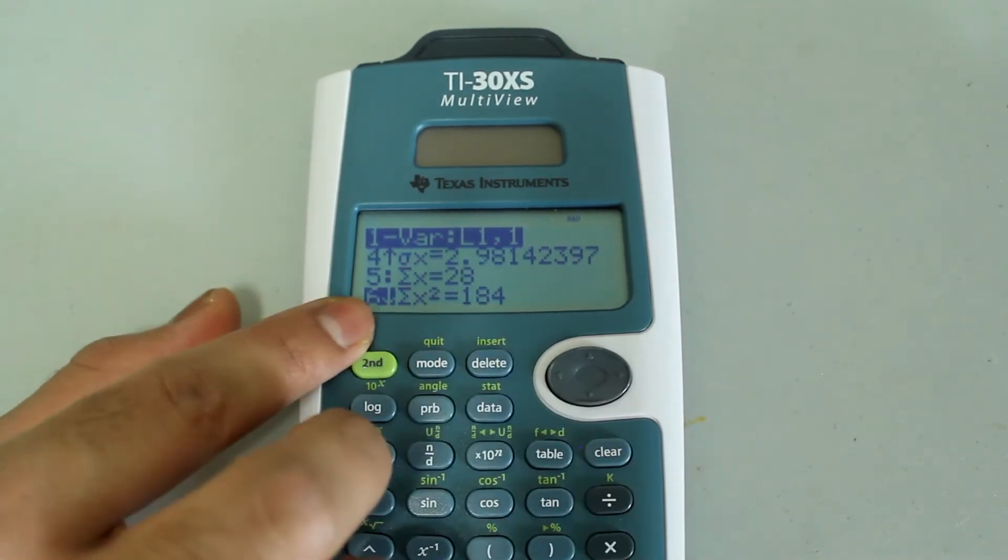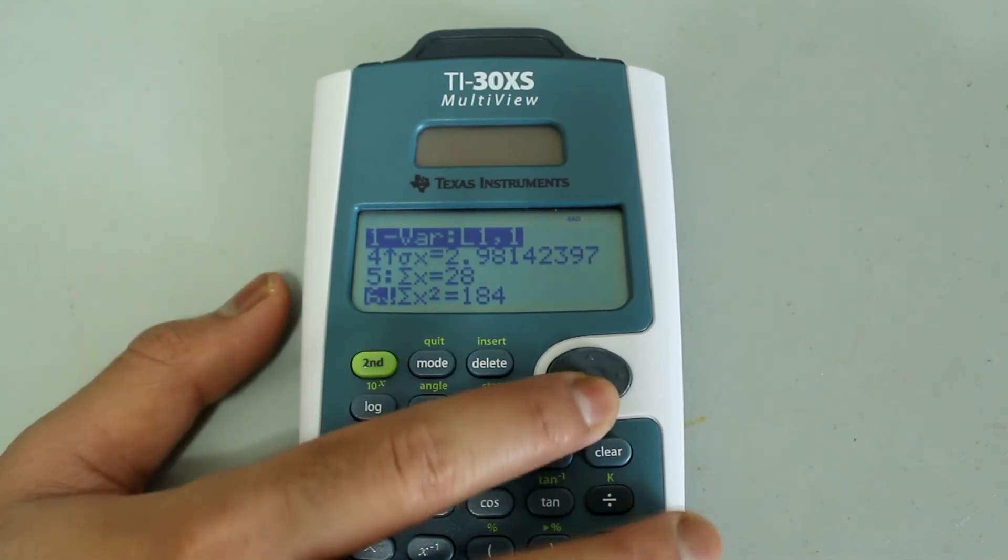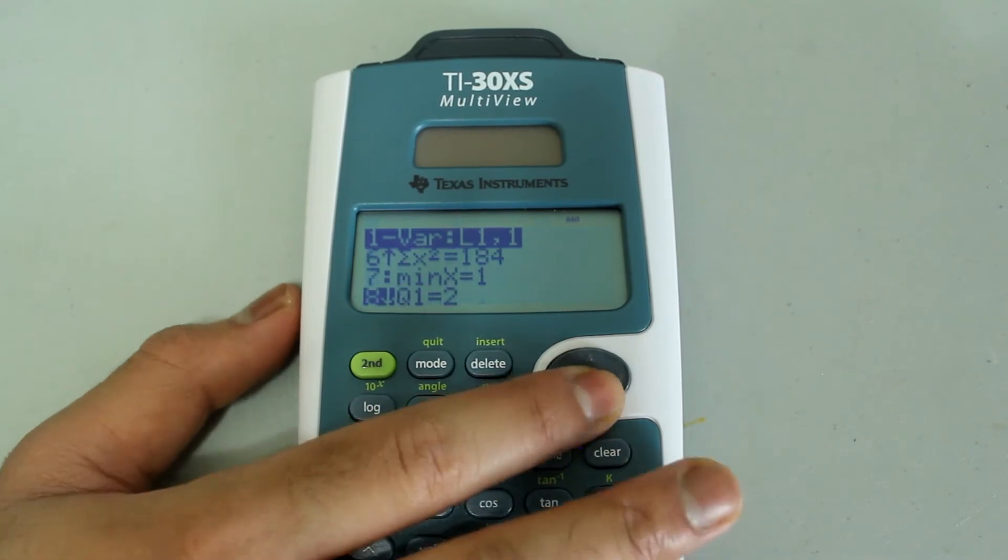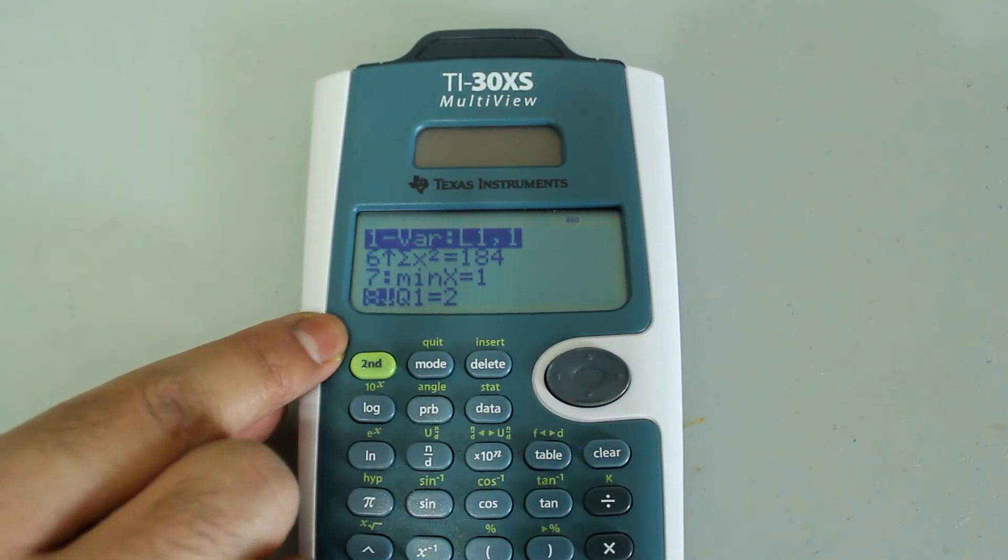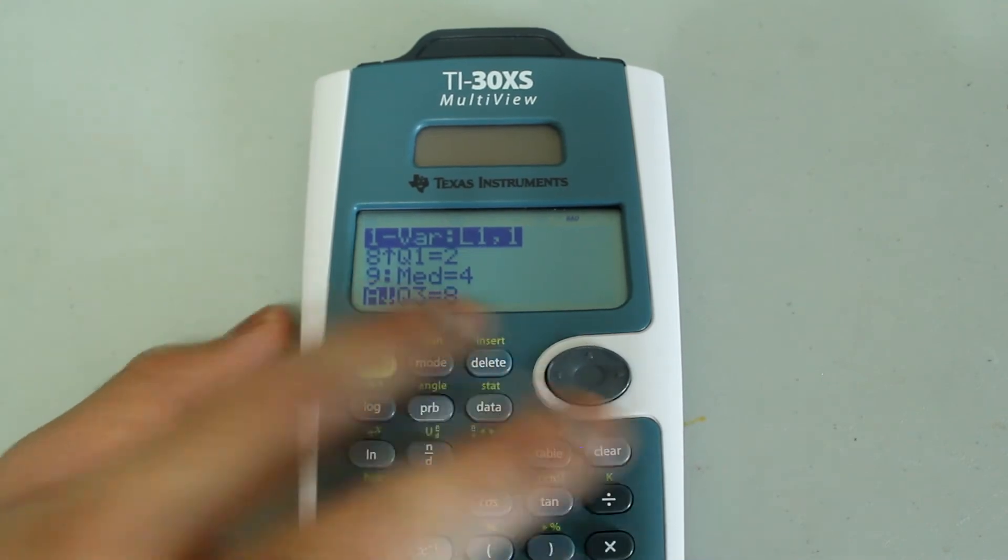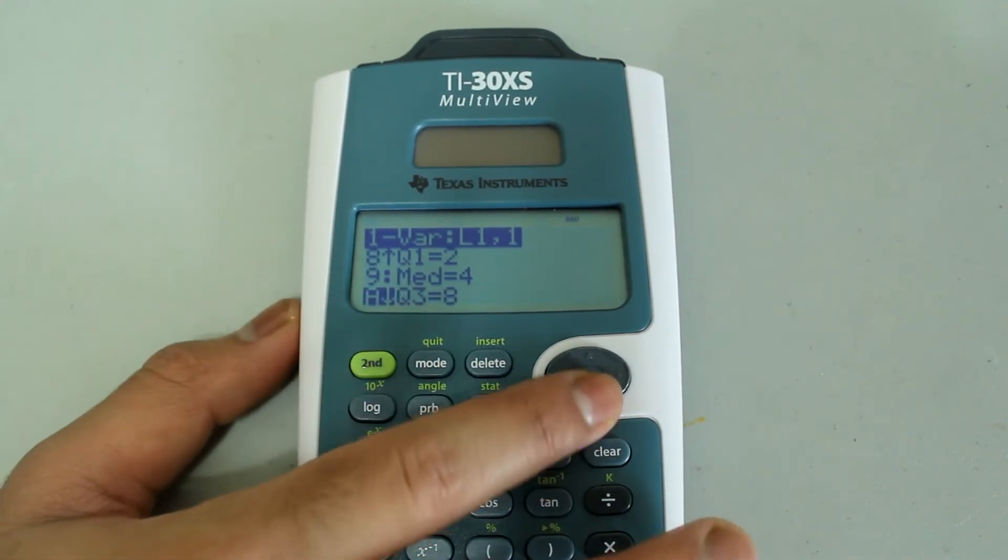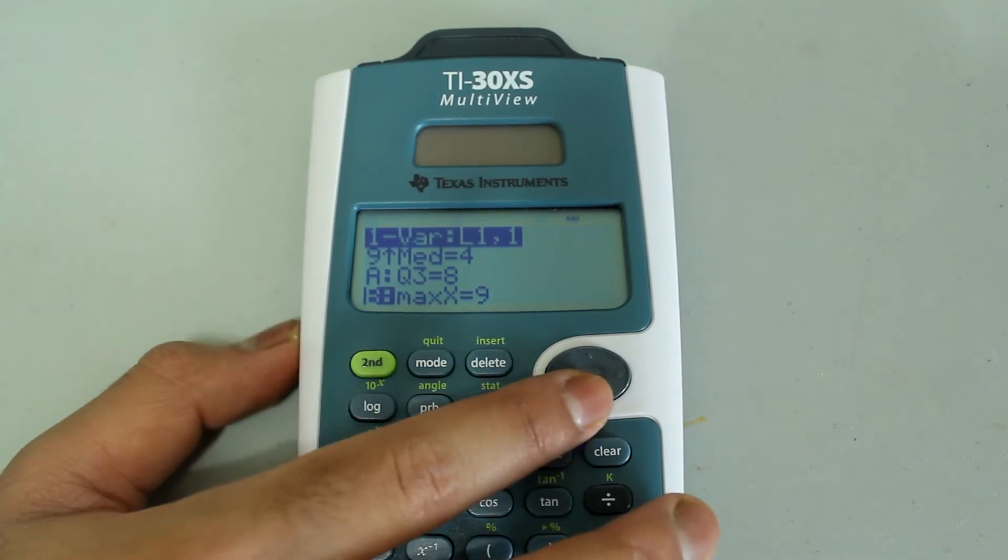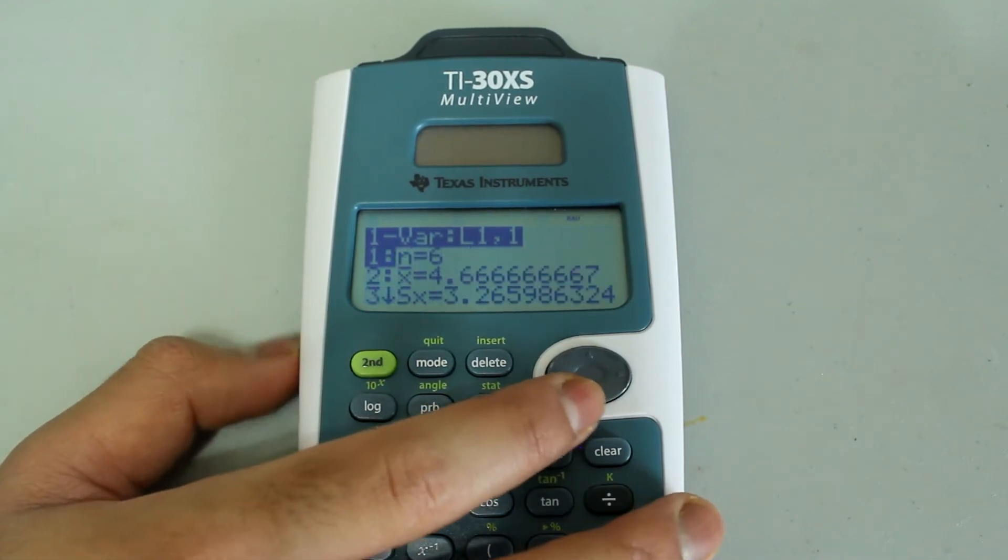And if you arrow down more, we have the minimum identified as 1, we have the lower quartile value as 2, the median as 4, and the upper quartile value as 8, and then the maximum is identified to be 9, and that's all.